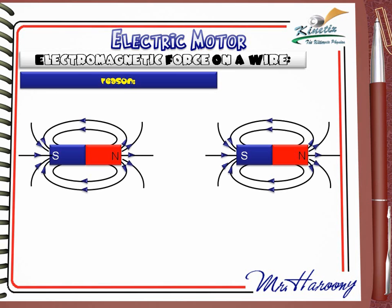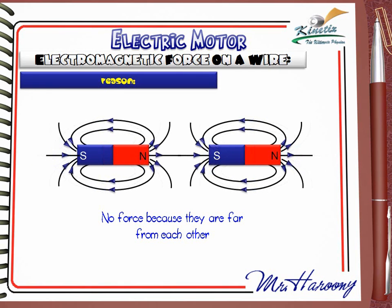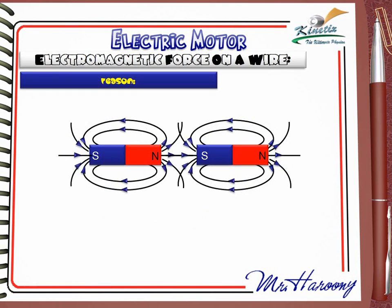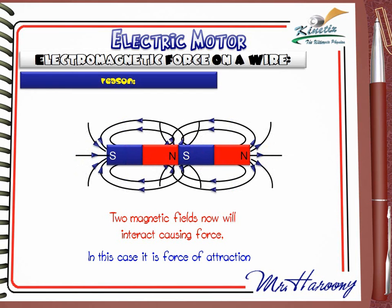A better approach is to study a similar case — two magnets. As long as they are far from each other, no force acts because they are far apart. As they get closer, at a certain moment the two magnetic fields overlap. Once they overlap, interaction between the two magnetic fields takes place, causing a force of attraction.